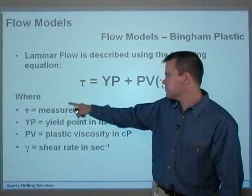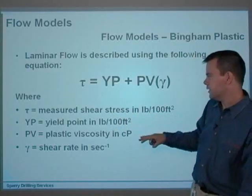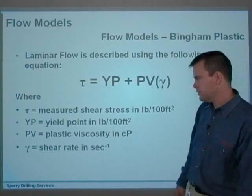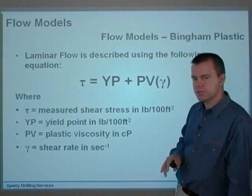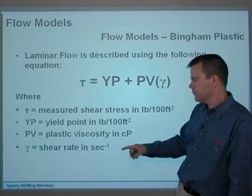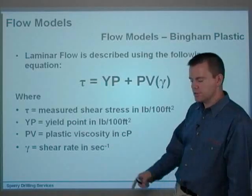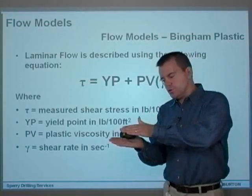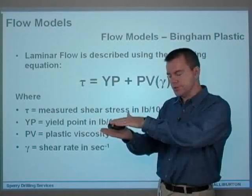Just to explain what tau is, tau is measured shear stress in pounds per 100 square feet. And YP, or yield point, is basically the yield point in pounds per 100 square feet. Usually these are the usual units, the API units I'm quoting here. PV's plastic viscosity is usually in units of centipoises, which I've mentioned before. And the shear rate is in per seconds, because it's the difference in velocity between the two planes of fluid, or two plates of glass if you like, with a fluid between them, or two actual laminar planes of fluid.